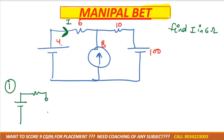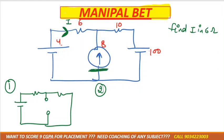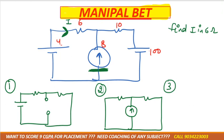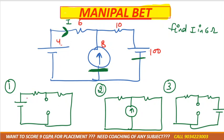Step one: keep the first source, kill others — current source is open circuit, voltage source is short circuit. Step two: keep the second source, remove others — voltage source is short circuit. Step three: keep the third source, remove others — current source is open circuit. Label the currents as I', I'', and I''' for steps one, two, and three respectively.